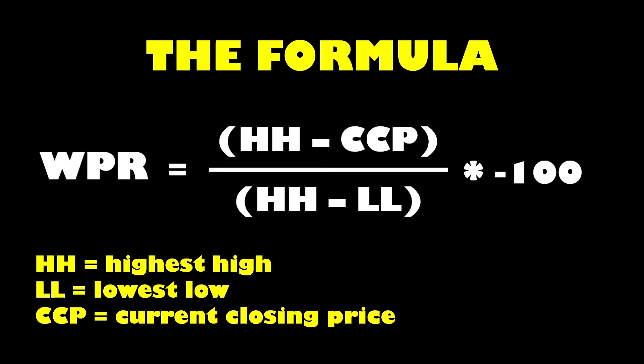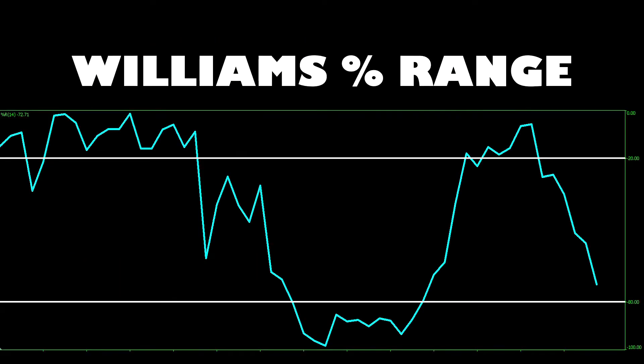The icing on the cake is where the formula puts it into that 0 to minus 100 scale by multiplying it by minus 100. Larry likely wanted the negative 100 scale because otherwise, with a positive scale of 0 to 100, the higher number would mean oversold and the lower would mean overbought — which could be confusing. After all that calculation, the result is a single line oscillator with default minus 20 and minus 80 levels and a 14-period input.